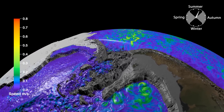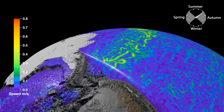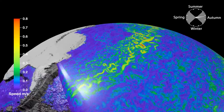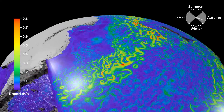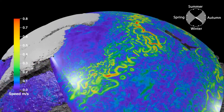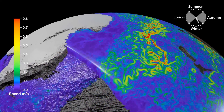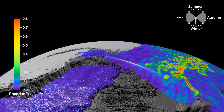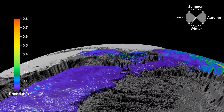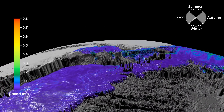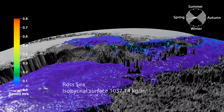Similar processes are occurring all around Antarctica. The energetic currents and features of the surface ocean hide pools of dense, deep water slowly moving along the ocean floor. The Ross Sea is another region where waterfalls of dense shelf water are continually feeding the bottom of the ocean.